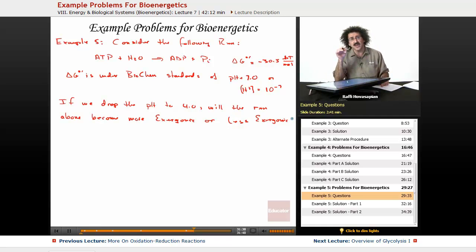In other words, if we drop the pH and make it more acidic, is there going to be more free energy available to do work, or less free energy available to do work? Is this going to get more negative, more free energy, or is it going to get positive, less free energy? That's our question. And, of course, the quantitative version, what will be the new delta G standard under conditions of pH 4 instead of pH 7? That's the real question.